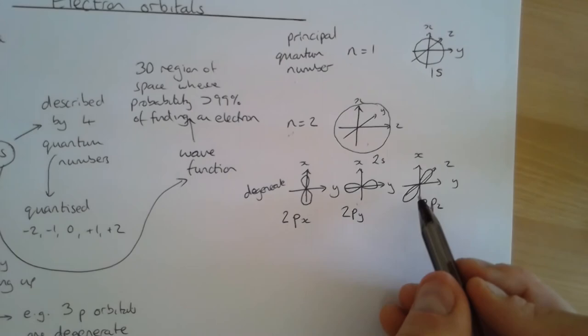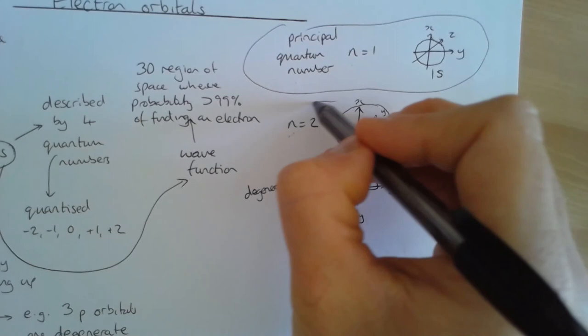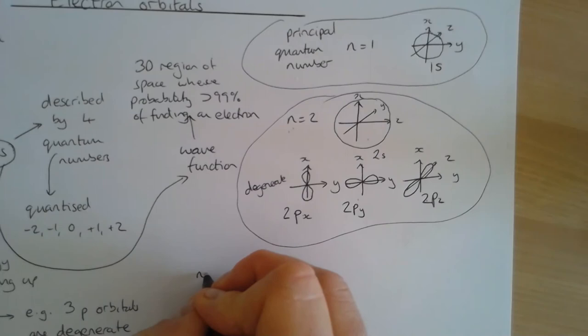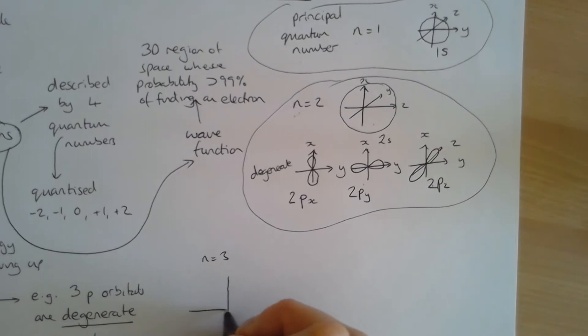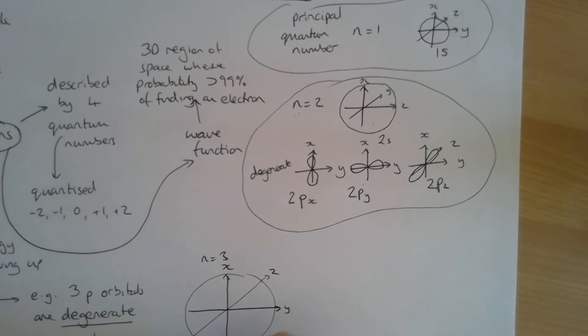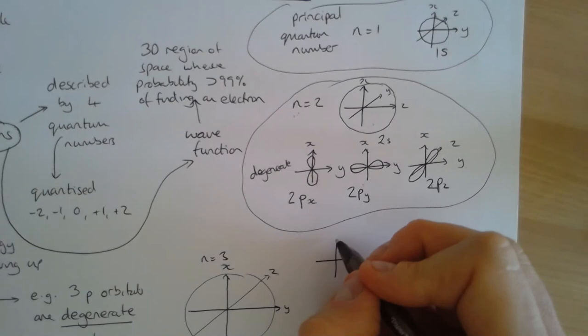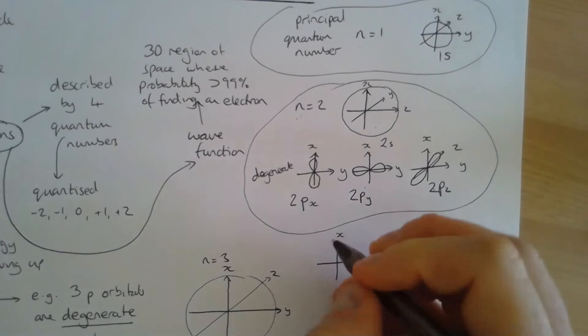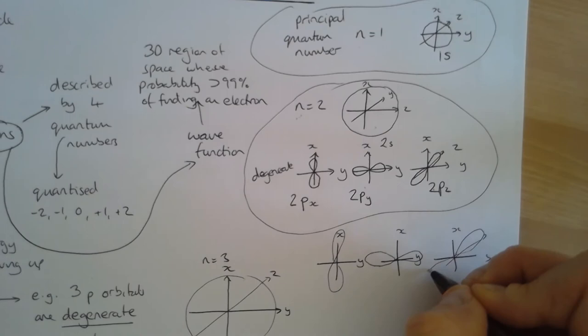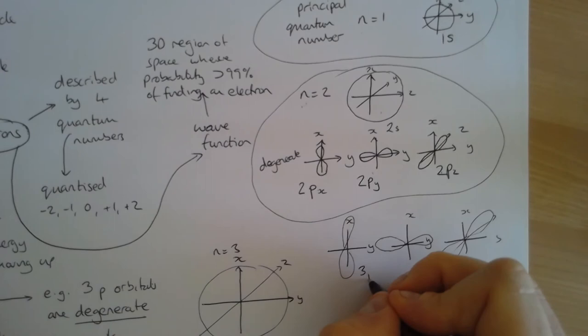For principal quantum number three, we have our 3s subshell — again, even bigger, with the region of space even larger than 2s or 1s. We also have three degenerate p orbitals, larger than before: 3px, 3py, and 3pz. The maximum region of space where we could find them is further out.